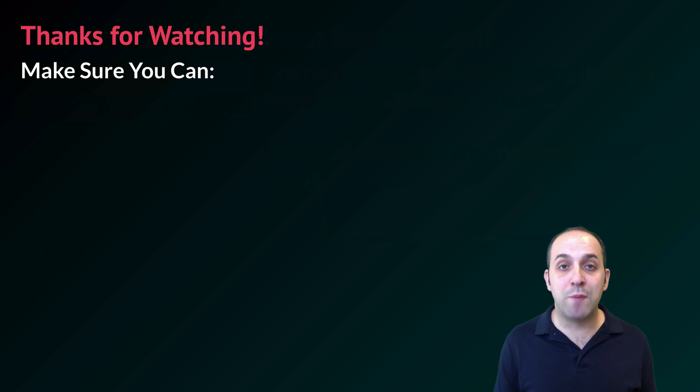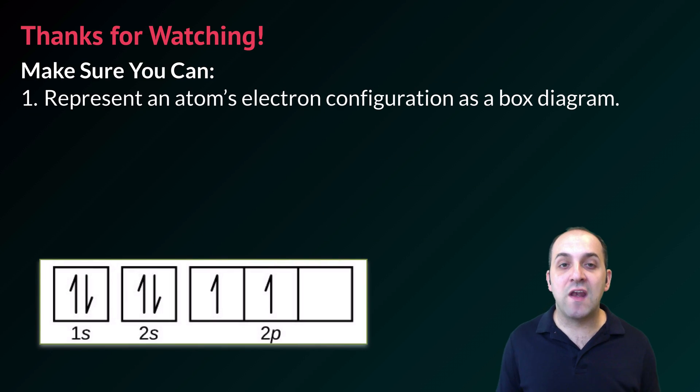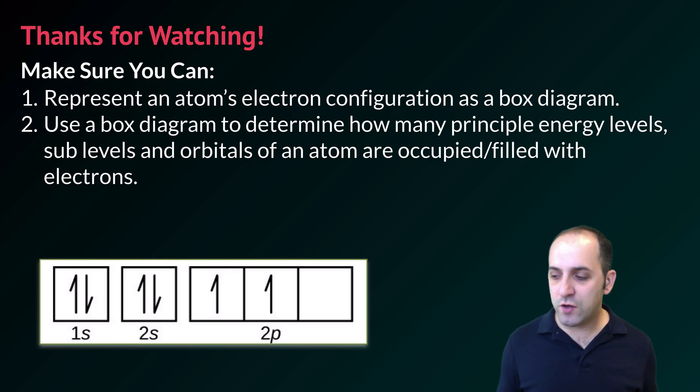Thanks so much for watching our discussion of box notation. Make sure that you can do the following things here at the end. Make sure that you can represent an atom's electron configuration as a box diagram. If I give you any element on the periodic table, you should be able to figure out what its electron configuration is going to look like as a box diagram, particularly if that element's in the first, let's say, four periods of the periodic table. Also make sure that you can use a box diagram to determine how many principal energy levels, sublevels, and orbitals of an atom are occupied with electrons and how many are filled with electrons.